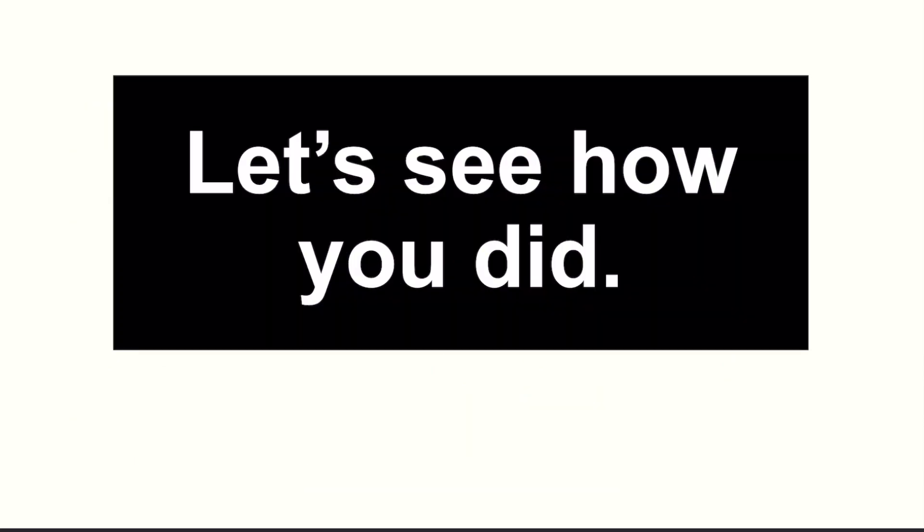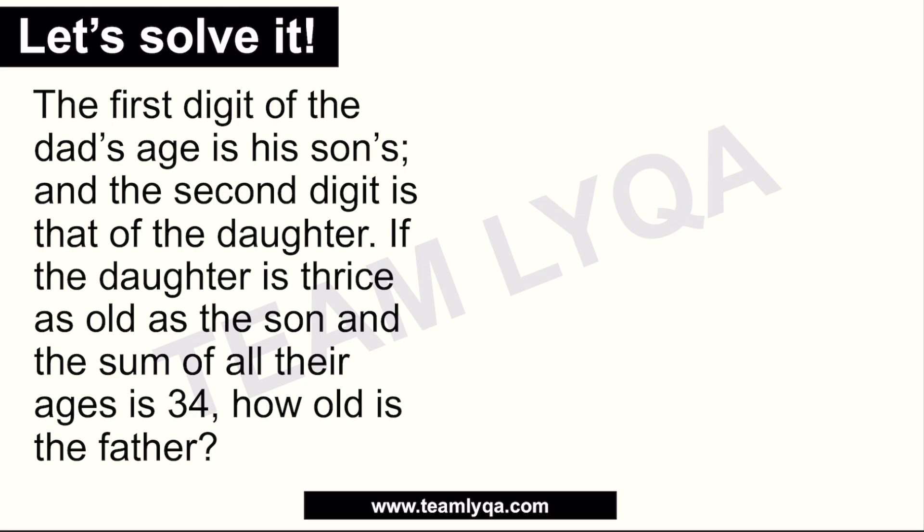Let's see how you did. Here's the quiz problem: the first digit of the dad's age is his son's age, and the second digit is that of the daughter. If the daughter is thrice as old as the son, and the sum of all their ages is 34, how old is the father? We again have three people: the dad, the son, and the daughter.